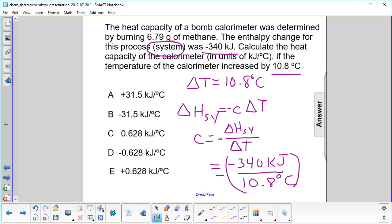And when we carry out the math, we will get 31.5 kilojoules per degree Celsius. The negatives cancel out. The answer is A.